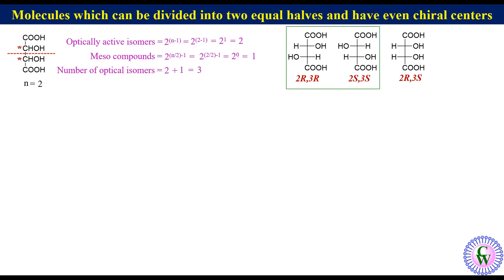Thus, the total number of optical isomers is 2 plus 1 equals 3. 2R3R and 2S3S are optically active, while 2R3S is meso due to the presence of a plane of symmetry.